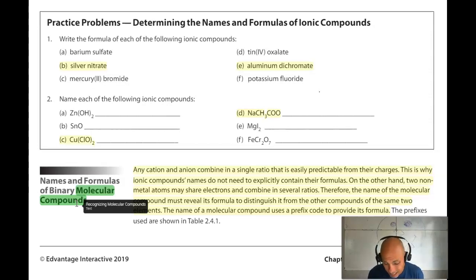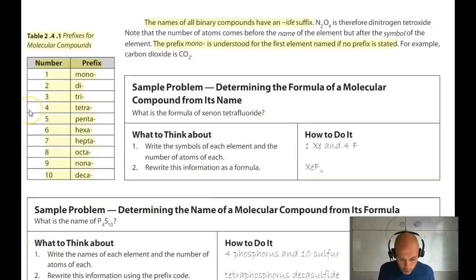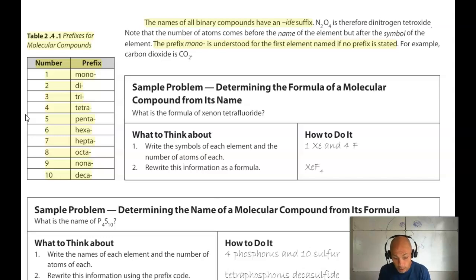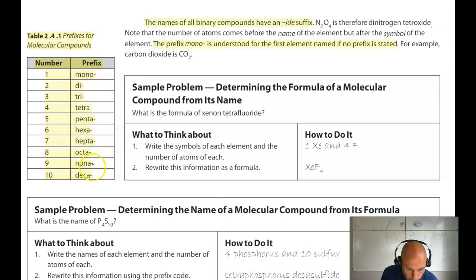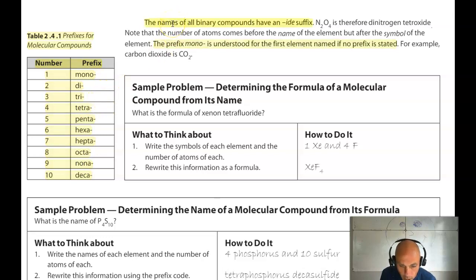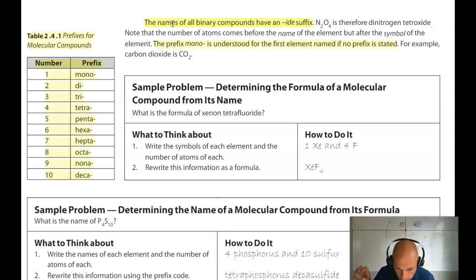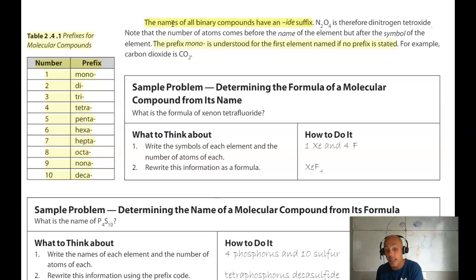Because molecular compounds aren't charged and their charges don't dictate a predictable ratio, we cannot just say the name of a molecular compound without indicating how many of each nonmetal there is. For molecular compounds we use prefixes to indicate how many of each nonmetal atom there is: mono, di, tri, and on down the line. The second nonmetal always ends in the '-ide' suffix in the name, while the first nonmetal's ending doesn't change. We don't use 'mono' for the first element, but we do use it for the second element if there's only one.